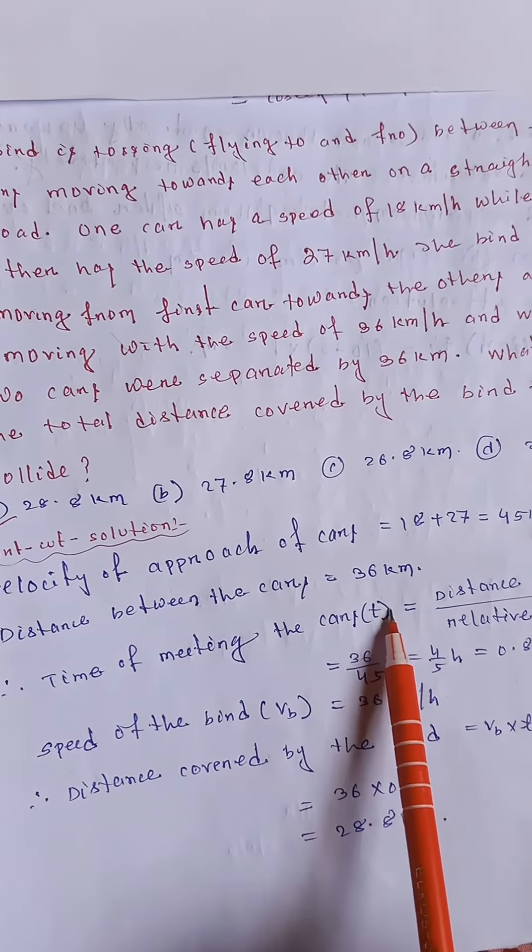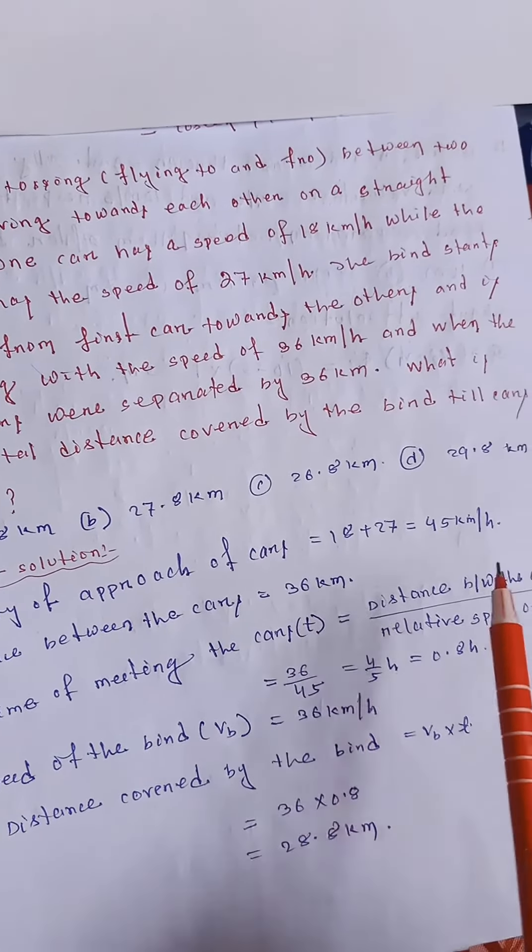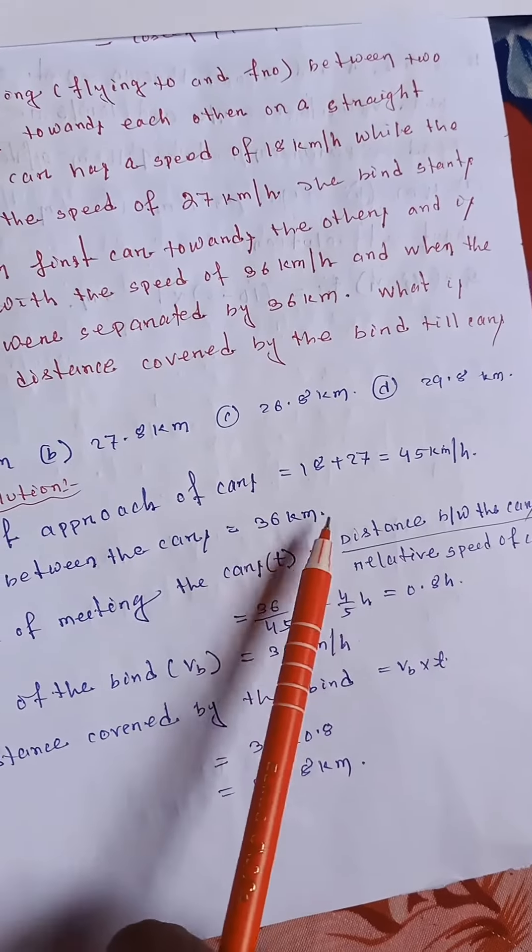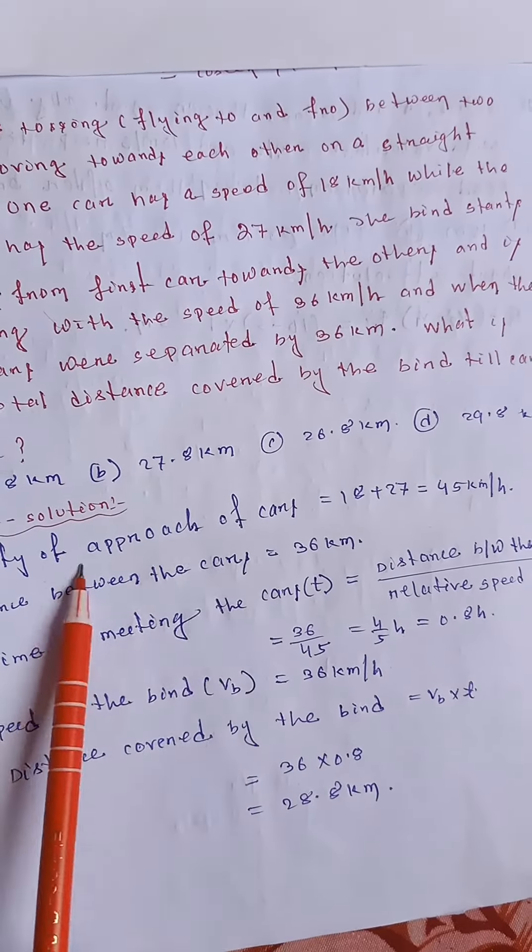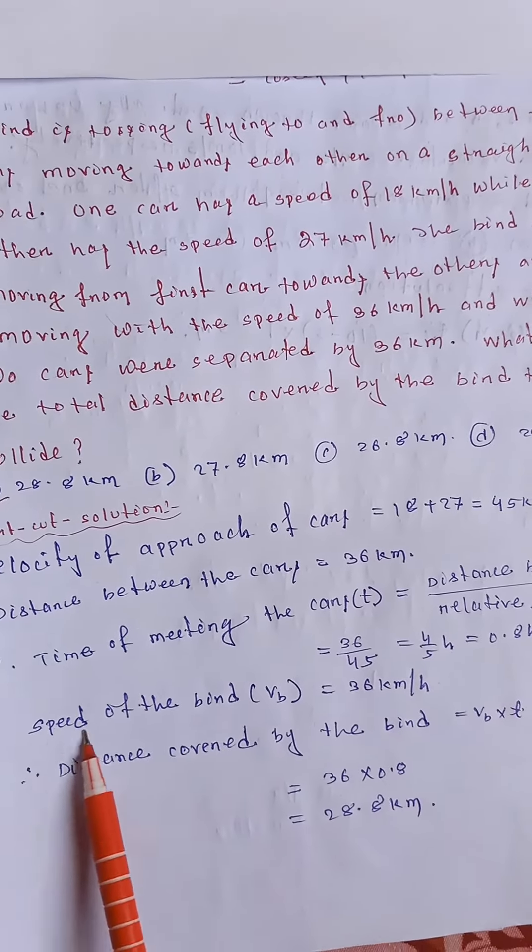And so, time of meeting the cars, that means distance between the two cars divided by relative speed. Distance between the two cars is 36. Relative speed between the two cars is equal to 45. So, we get 0.8 hours.